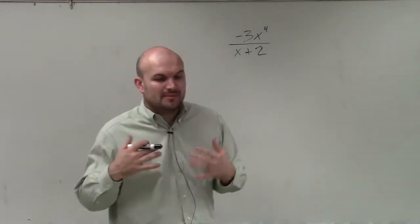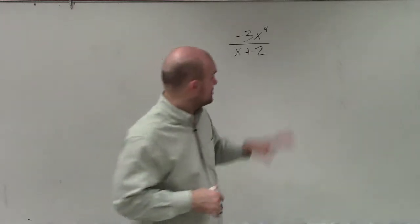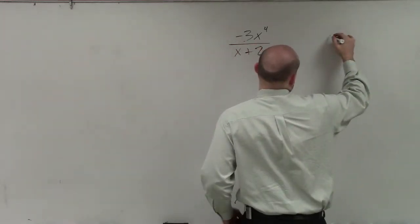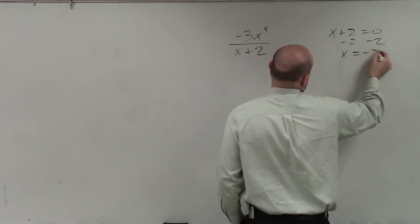The first thing we need to do is understand what is our zero of our divisor. So we take our factor here, we have x + 2, and we set it equal to 0 so we can determine what the zero is. So x equals -2.